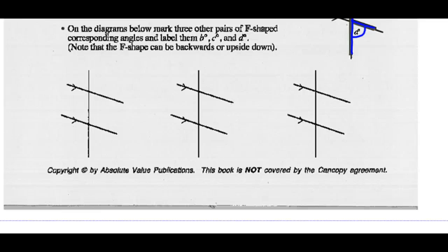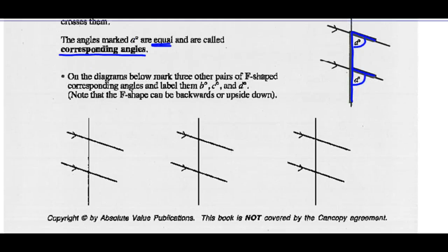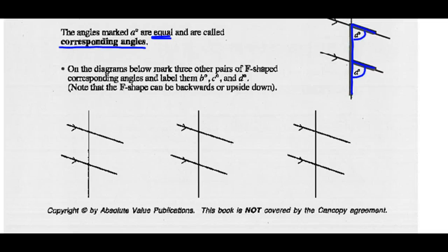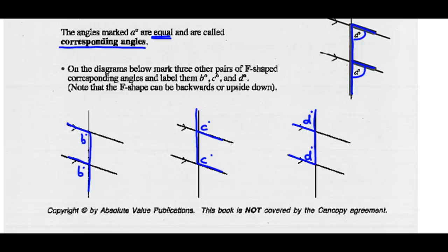Note that the F shape can be backwards or upside down. We've got the F shape for A. I could make this F shape and call these angles B. I could make this F shape and call these angles C. And the fourth one would be this F shape, labeling those angles D. All of these are called corresponding angles, and the sets of B's, C's, and D's are each equal, just like the set of A's are equal. So we've got four sets of equal angles.